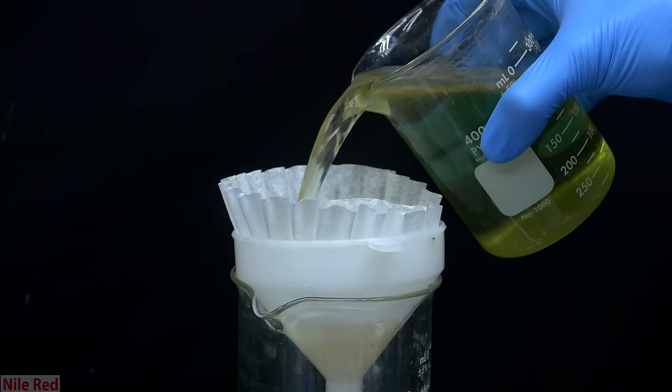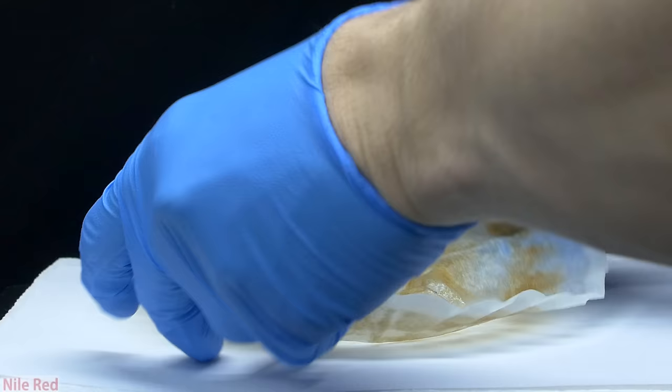So just like before, to separate off the cellulose, I filter it through a coffee filter. Once everything's been filtered through, I leave out the nice dirty brown cellulose to dry.